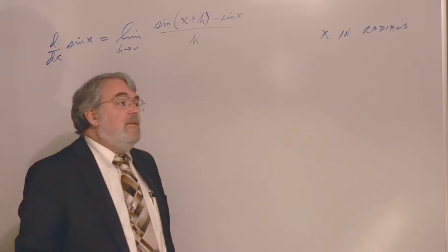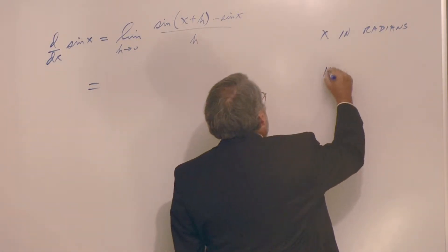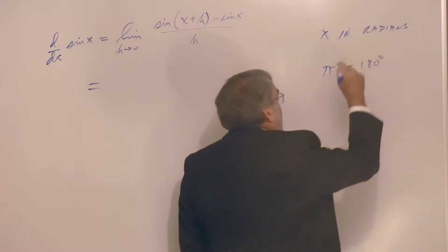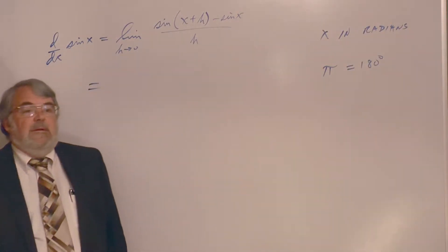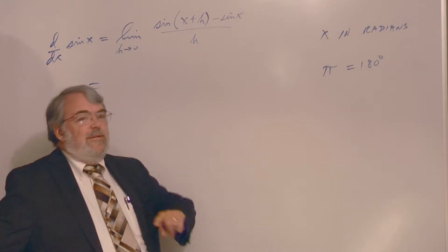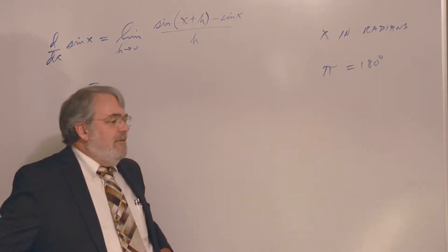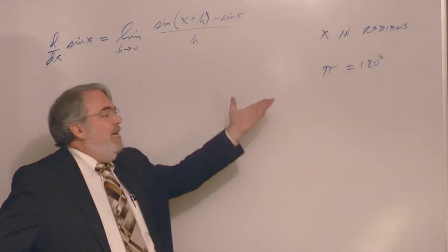But radians, just a real fast review, pi radians is equal to 180 degrees, or two pi radians is 360 degrees, a complete circle. It's two pi radians.